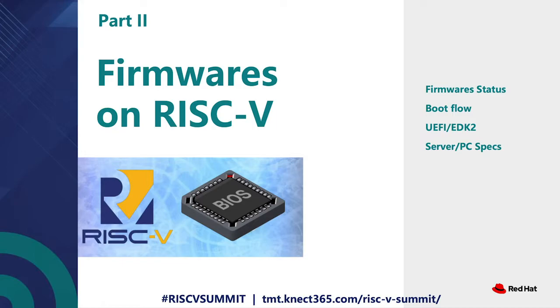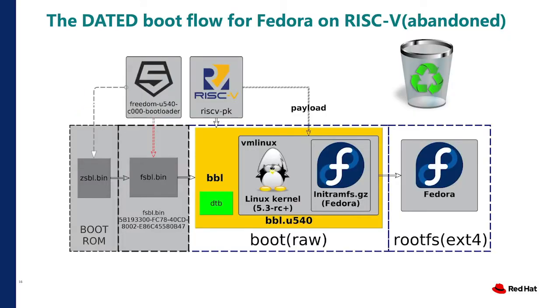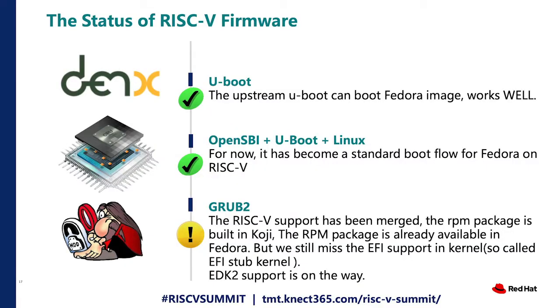For firmware on RISC-V: long ago we used BBL to boot VM Linux, then an initial filesystem and Fedora root filesystem. But it was very inconvenient — BBL is a very simple bootloader and not really good to use. Thanks to U-boot and OpenSBI development, the upstream U-boot can now boot Fedora imaging very well. We have made OpenSBI, U-boot, and Linux kernel the standard boot flow for Fedora on RISC-V.